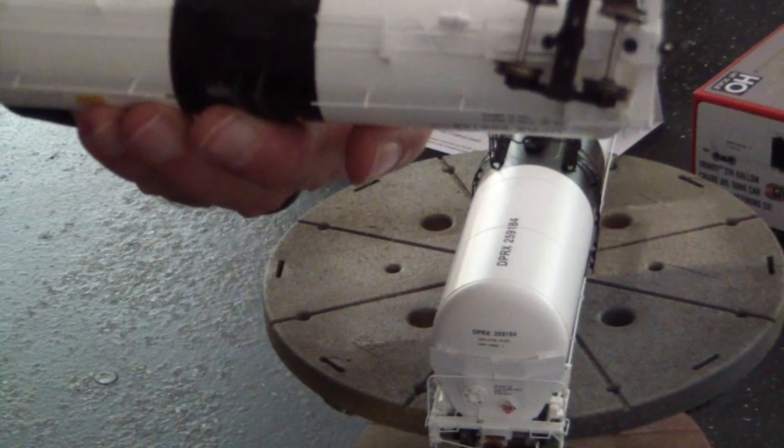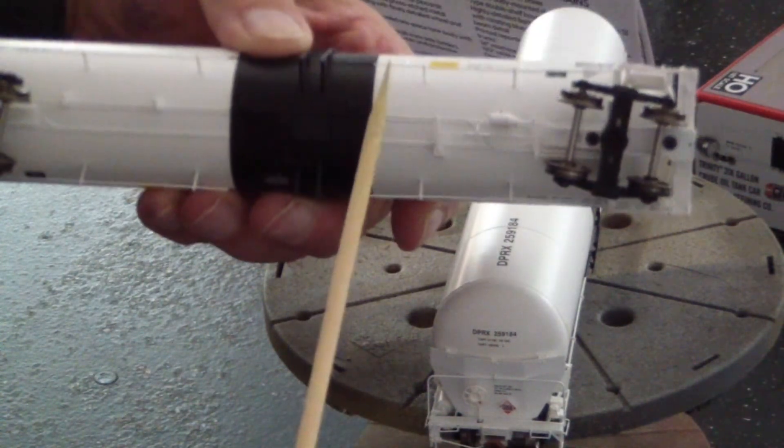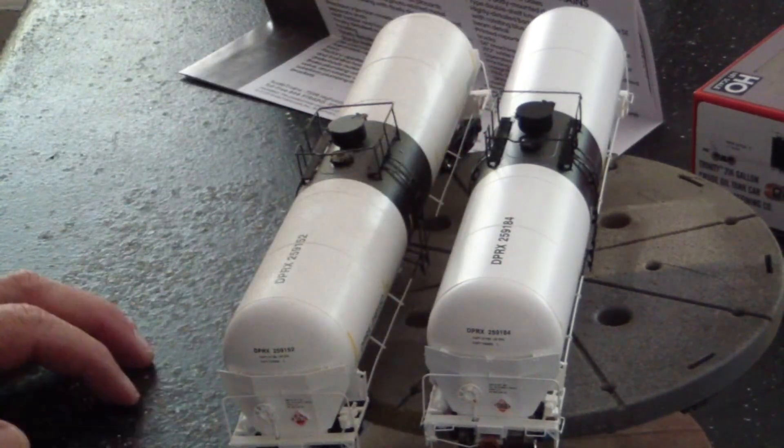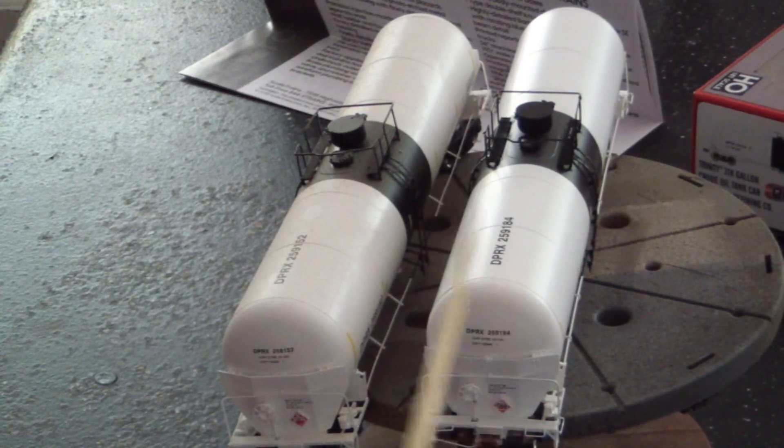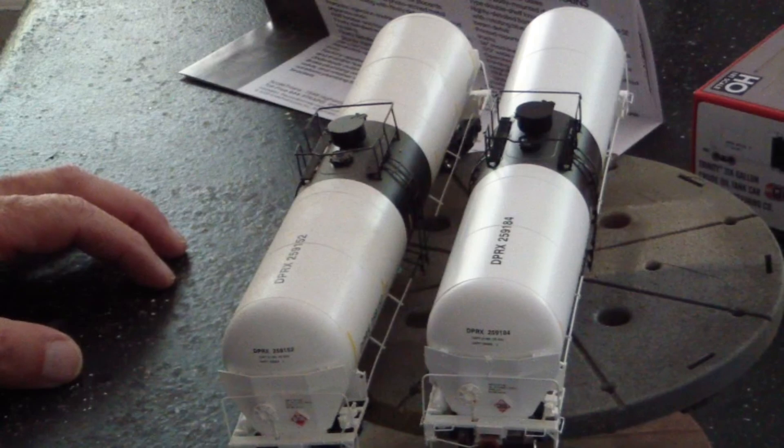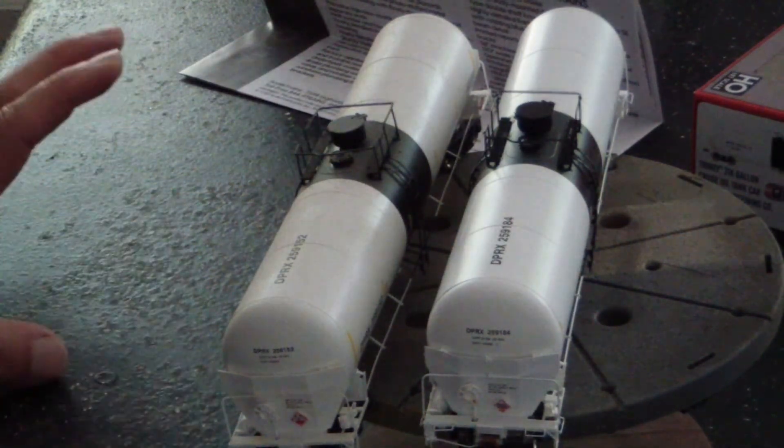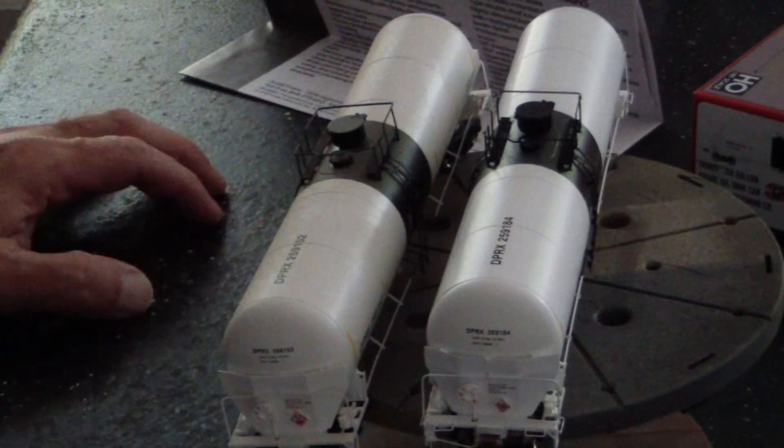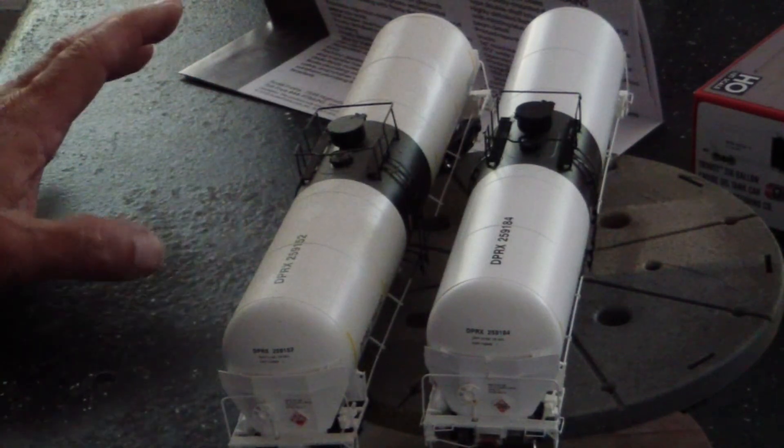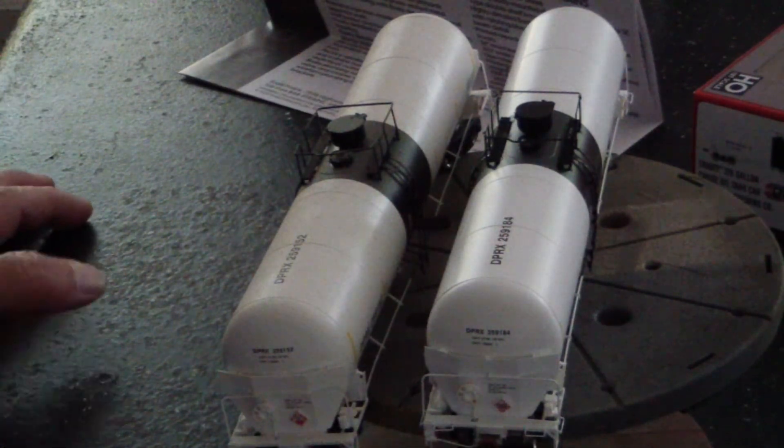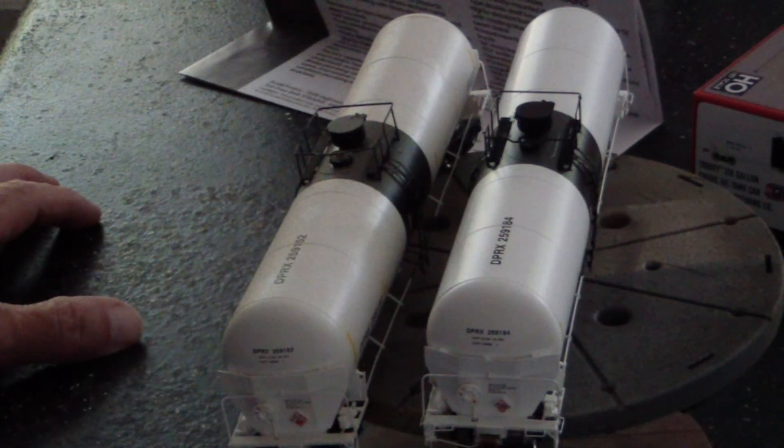We also have the piping on the bottom just like on the Rivet Counter. So there's not too much of a difference, I think personally, between the two. Unless you really get down and scrutinize it, I wouldn't be able to tell the difference where it sits on my layout. I wouldn't be able to tell you which one's my Rivet Counter and which one is my Operator. Once again, hands off to Scale Trains. I am not sponsored by them in no way, shape, or form. I just like their product.